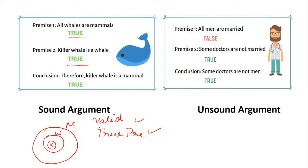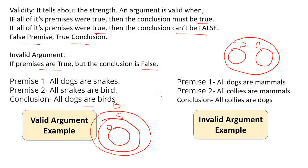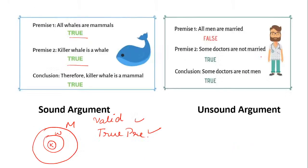The two conditions for a sound argument: it should be valid and have true premises. In the whale example, 'all whales are mammals' is a true premise, and 'killer whale is a whale' is also a true premise, so this argument is both valid and sound. A student asked how we can tell if a Venn diagram is right — we draw the circles and check whether the conclusion follows from the diagram.